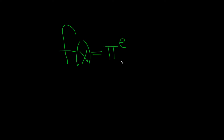In this problem, we're being asked to find the derivative of this function. So pi is a number — it's like 3.14, etc. e is also a number — it's like 2.71, etc. So you have a number being raised to a number, which means this whole thing is actually a constant. It's just a number.